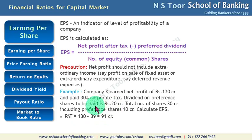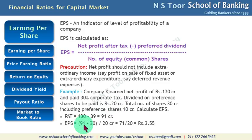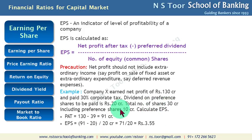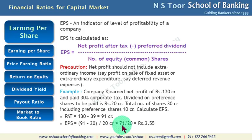Then we adjust for the dividend paid on preference shares, which has to be excluded: 91 minus 20 = 71. The number of equity shares is total 30 crore minus preference shares 10 crore = 20 crore. Hence, earning per share = 71 divided by 20 = rupees 3.55.